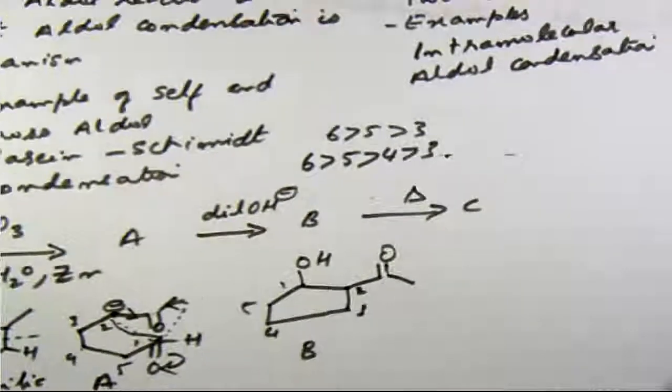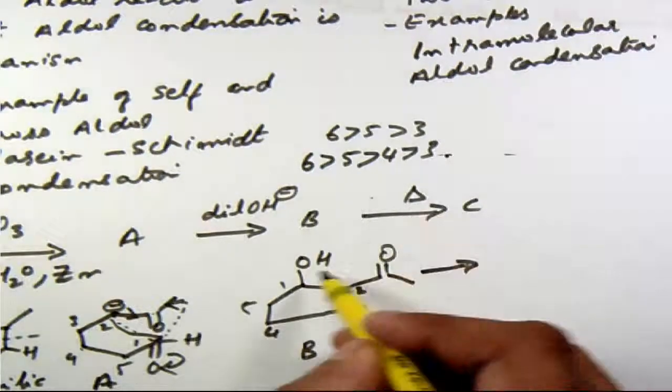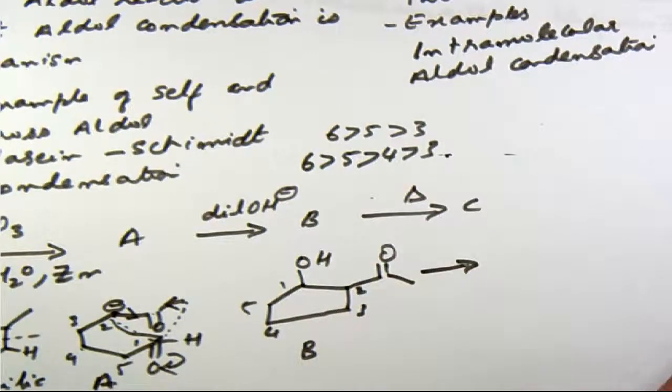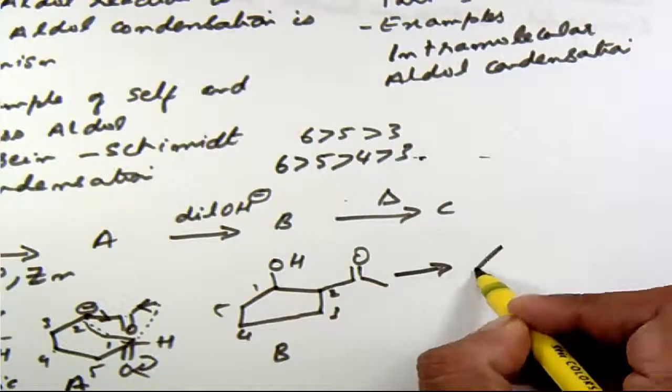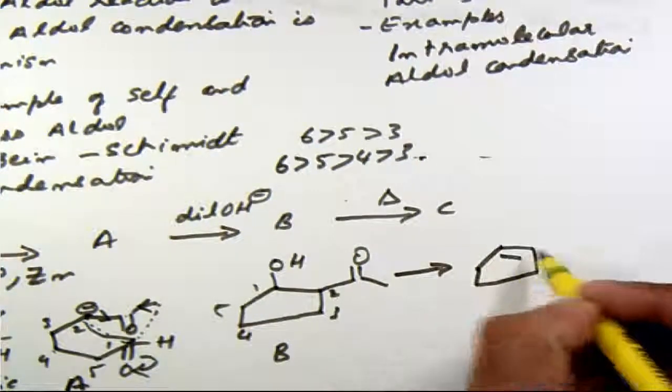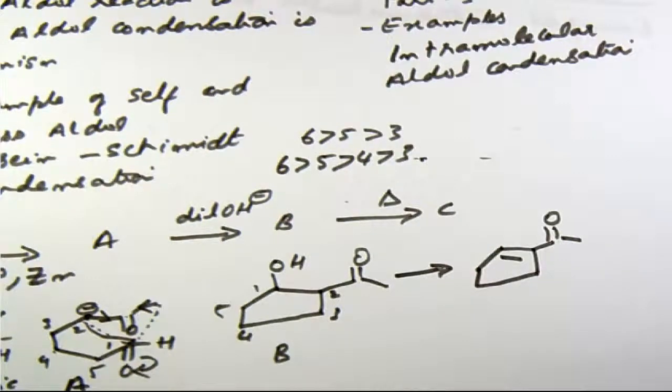And when I go from B to C, aldol condensation completes, dehydration happens and the double bond will form here so that it is conjugated with this double bond O. So I'm going to get a five membered ring, there will be a double bond here, double bond O, COCH3, so that is the product C.